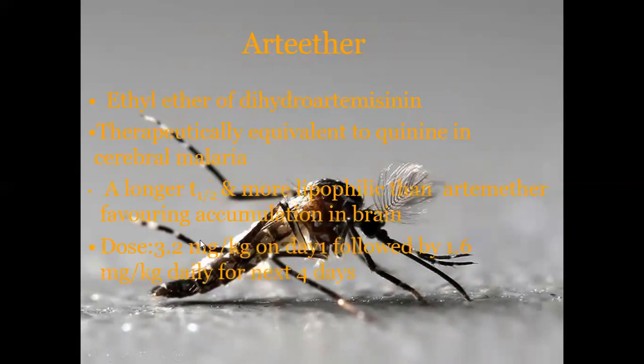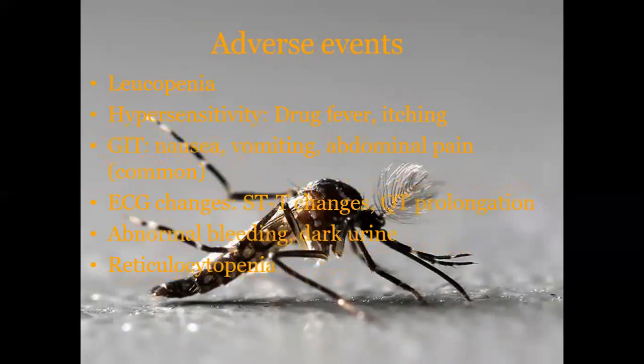Arteether is the ethyl ether of dihydroartemisinin. It is therapeutically equivalent to quinine in cerebral malaria. It has a longer half-life and is more lipophilic than artemether, favouring accumulation in the brain. Dose: 3.2 mg per kg on day one, followed by 1.6 mg per kg daily for the next four days.